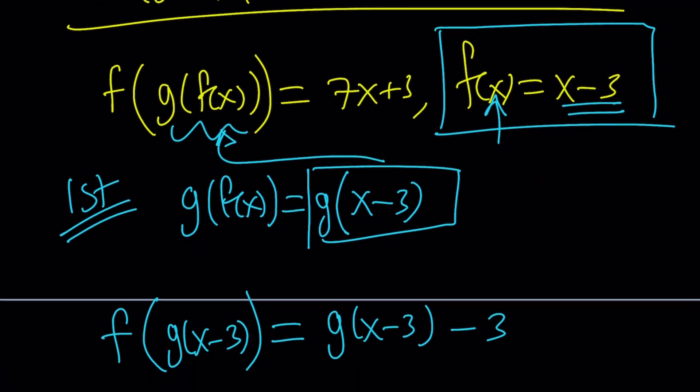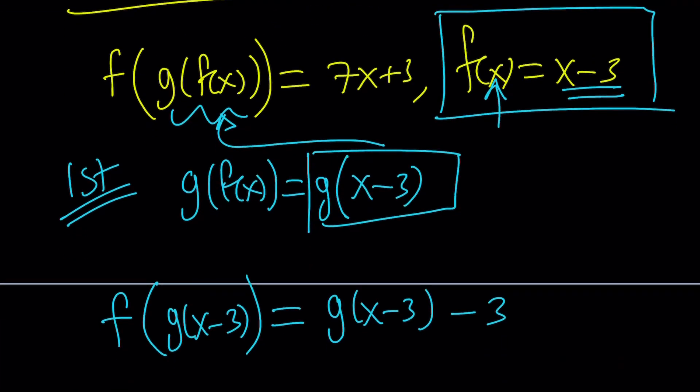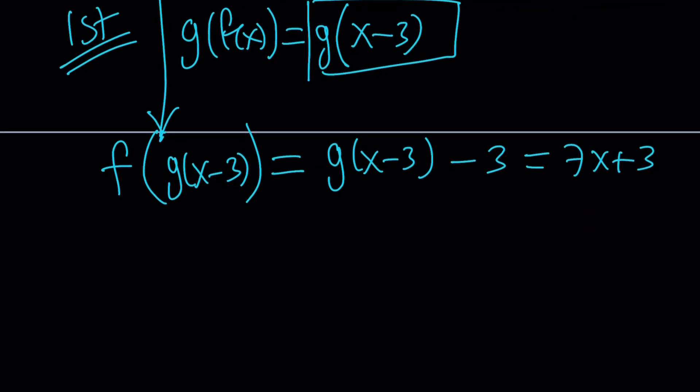So what is this going to give us, though, right? Well, we do know what that equals. f of g of f of x, which is this, right, is equal to 7x plus 3. Make sense? This is f of g of f of x. I hope you can follow. So from here, we can solve for g, but first we have to add 3. That's going to give us 7x plus 6. But I'm trying to find g of x. I have g of x minus 3. So what can I do?